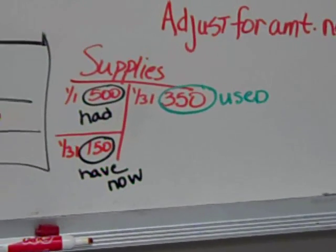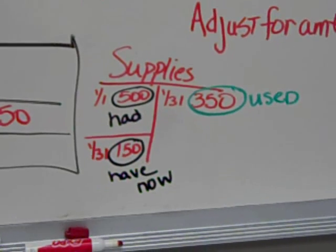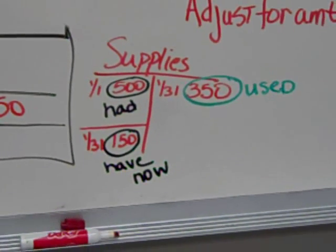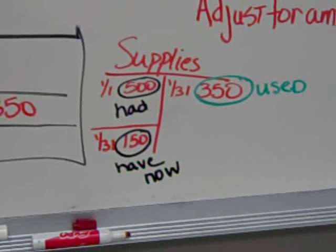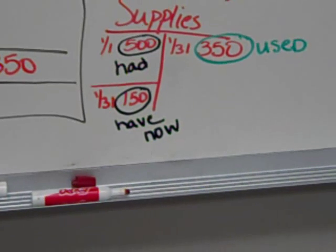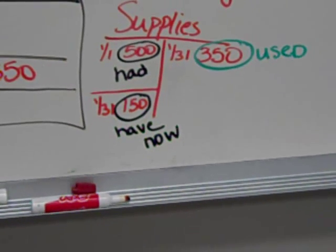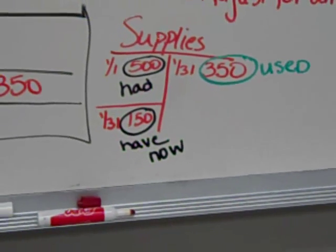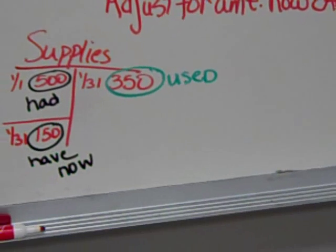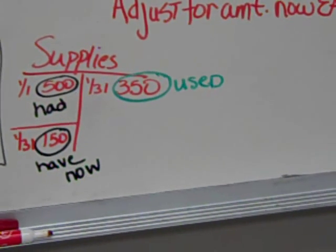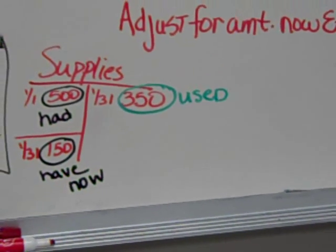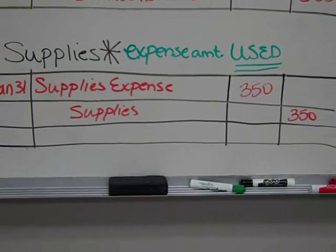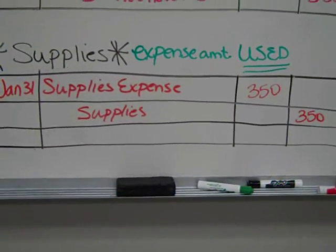Our T-account will show an original entry where we bought $500 in supplies on January 1st. At the end of the month, a count shows we now have $150 in supplies, so the supplies account has a $150 balance. To get from $500 to $150, we reduced the supplies account — on the credit side, circled in green, is $350. That is the amount of supplies used, and that is what we adjust for: debit supplies expense and credit supplies for the amount used during the period.